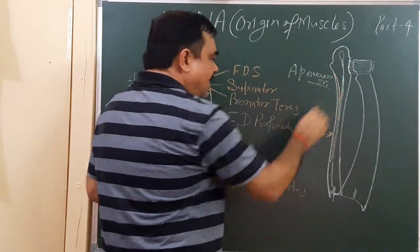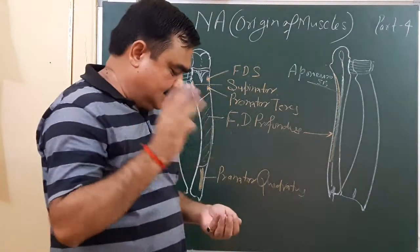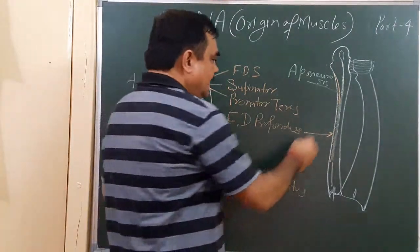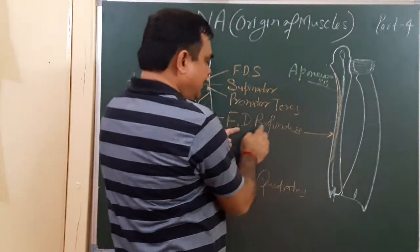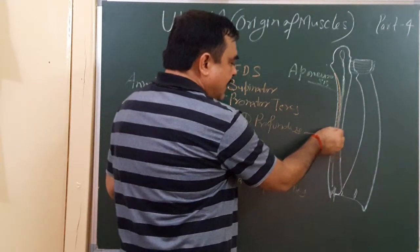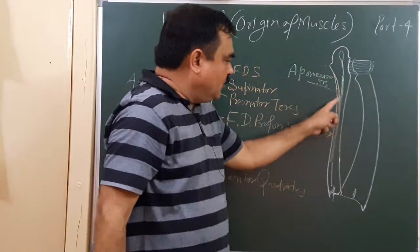And this aponeurosis gives attachment, gives origin to three muscles. One is this muscle, flexor digitorum profundus. Some fibers of flexor digitorum profundus arise from this aponeurosis.